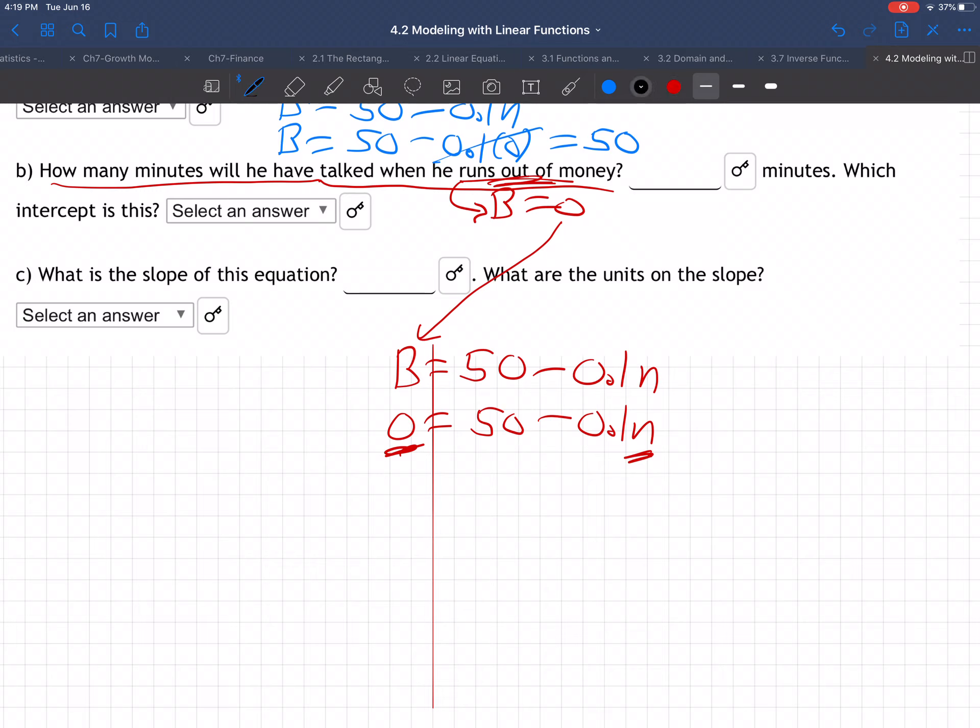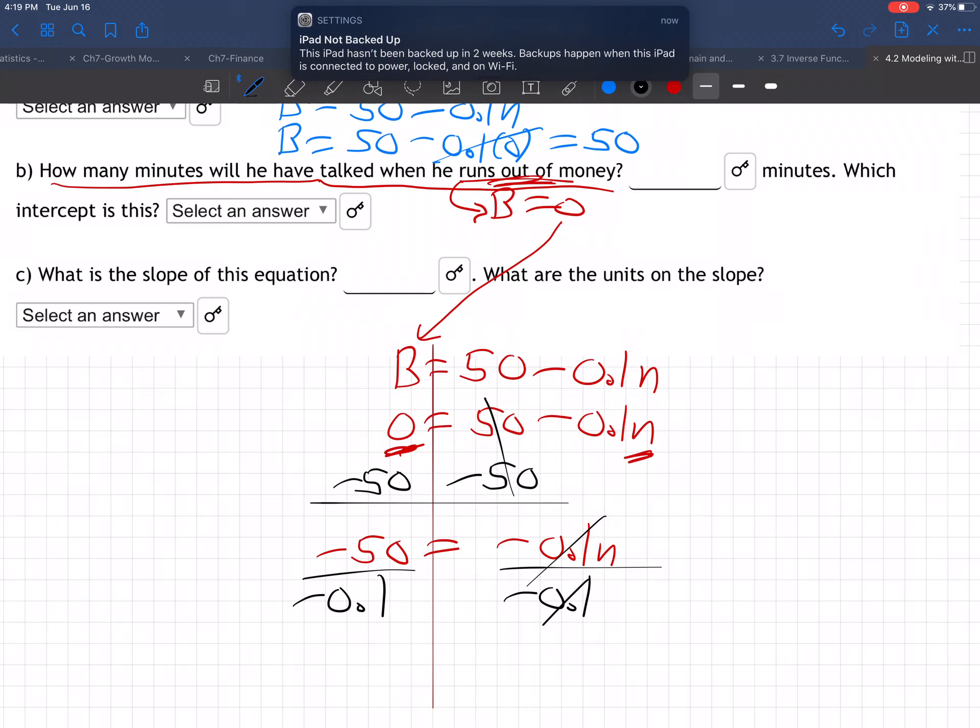We need to get N alone. Subtract 50 from both sides: 0 - 50 = -50, which equals -0.1N. Last step, divide both sides by -0.1, and N equals positive 500. So 500 minutes.